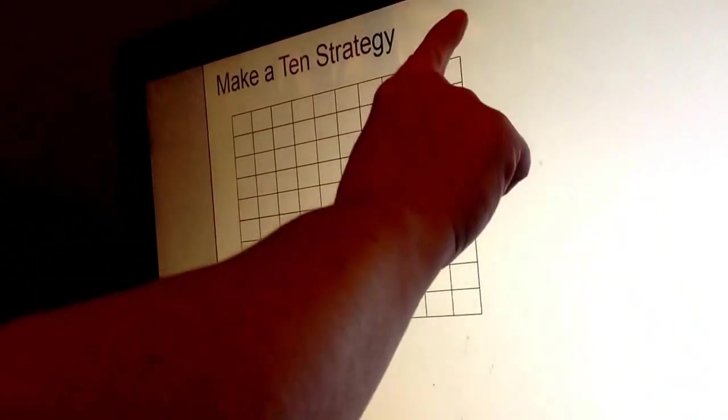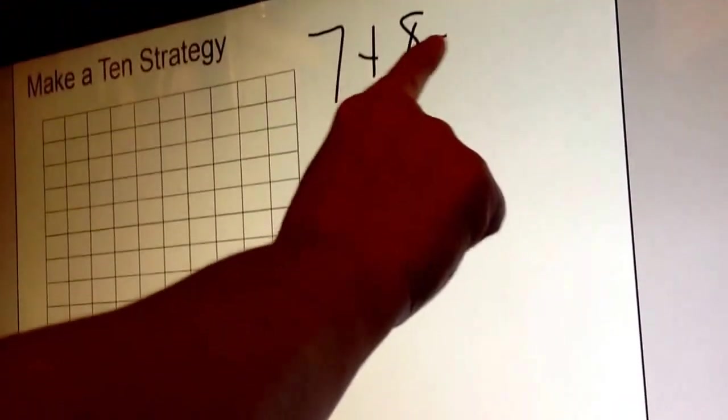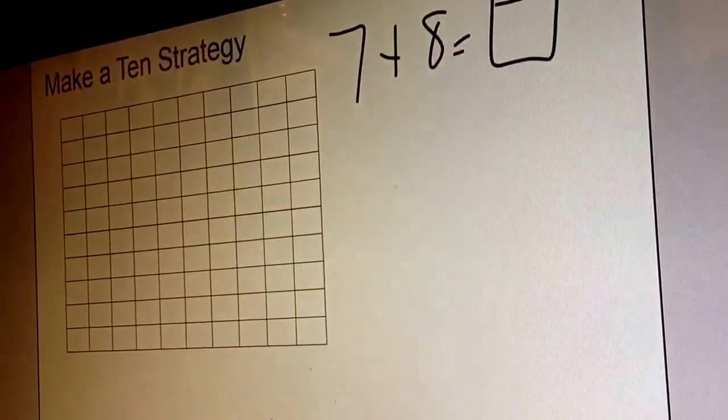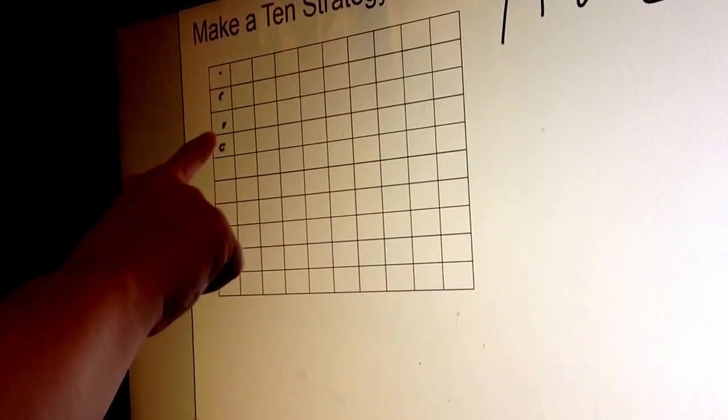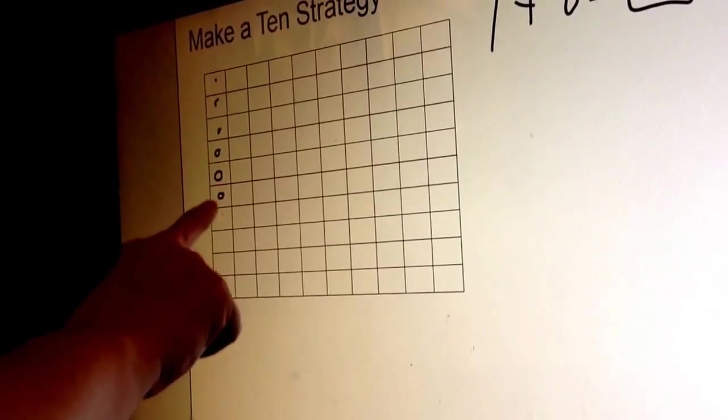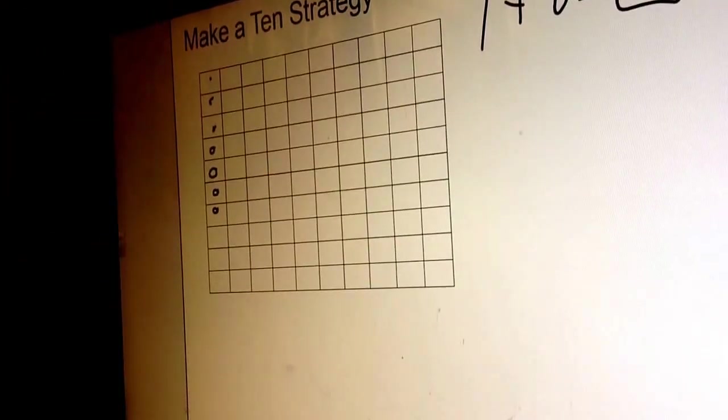So if we took the equation 7 plus 8 equals box, and we added 7 circles onto the make a 10 grid, and then we started with 8 more, picking up where we left off.